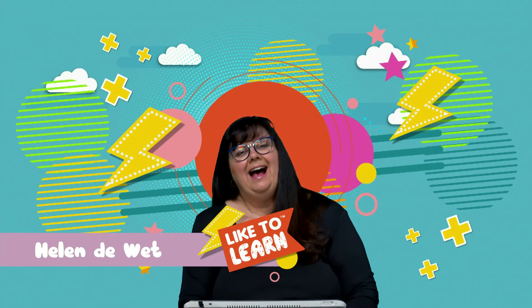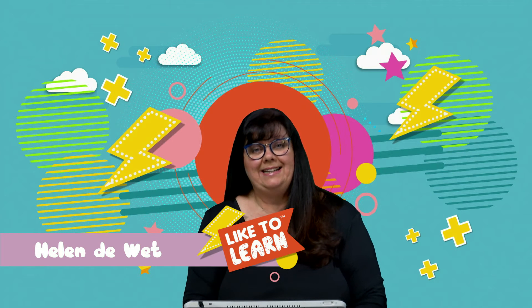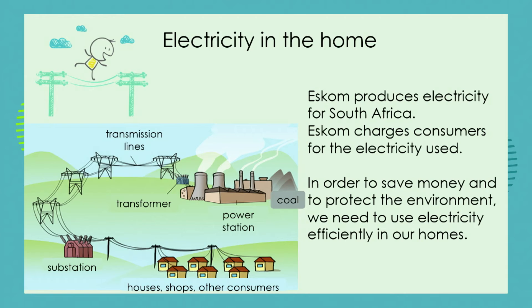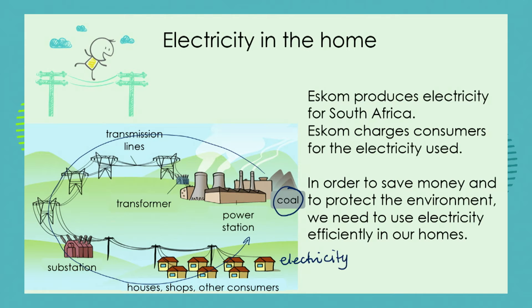Hello grade sevens. I hope you're ready for your next natural sciences lesson. I'm Helen and what we're going to look at today is how we use electricity in the home. We've been talking about energy transfers in this big system that takes potential energy from the coal and transfers it into electricity or electrical energy that consumers are going to use.